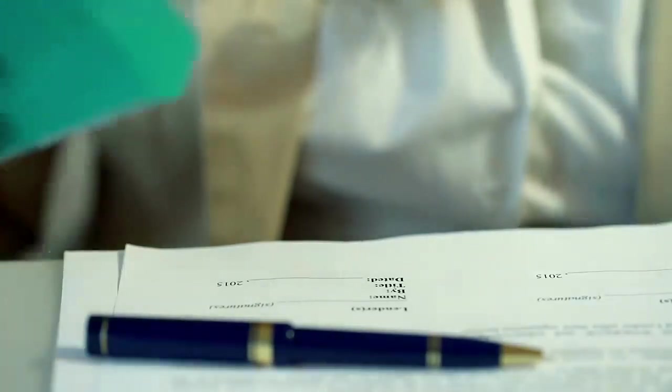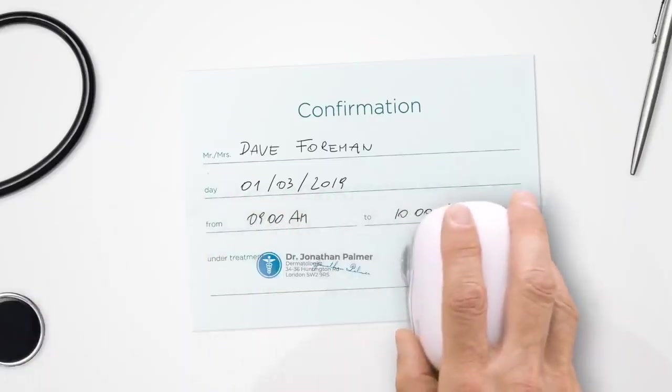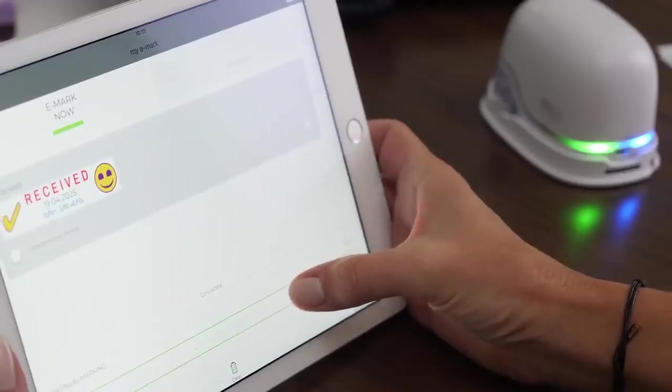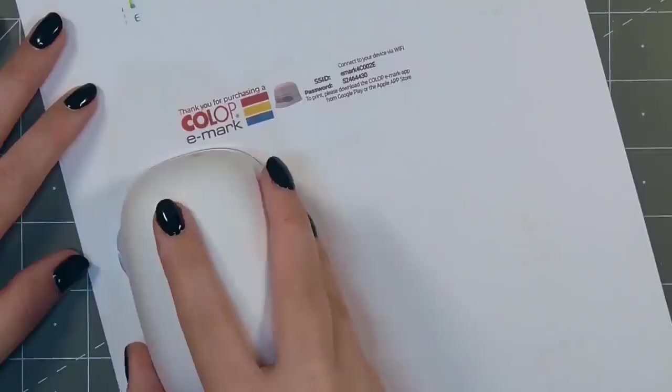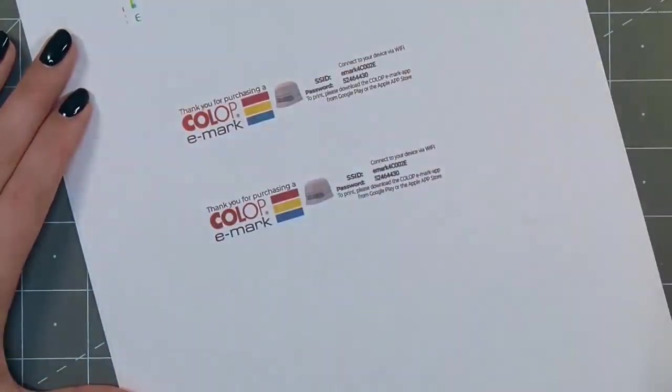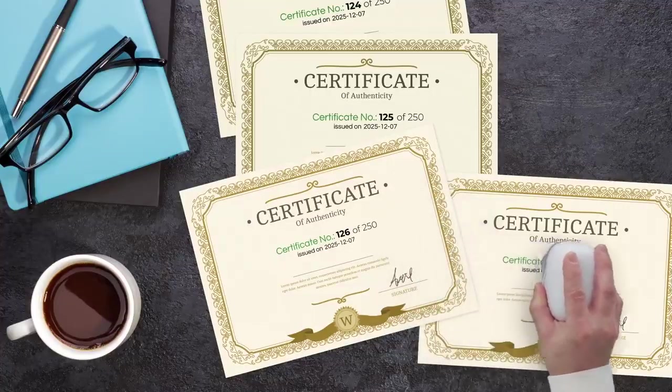You don't need to waste money on costly rubber stamps for your office. The Colop eMark can replicate them all in moments. You can change designs super quickly and easily using the free Colop app on your smartphone. You might think that this kind of futuristic printing technology would set you back thousands of dollars. But the Colop eMark costs just $400.